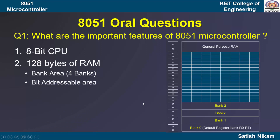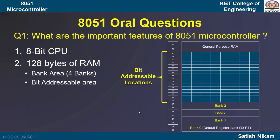The next part is the bit addressable area, which is used when you have to deal with single-bit data. This bit addressable area contains 16 memory locations from 20H to 2FH, and each memory location can contain 8-bit data, so total 16 into 8 equals 128 bits in the bit addressable area. The third part is a general purpose area to store data temporarily.